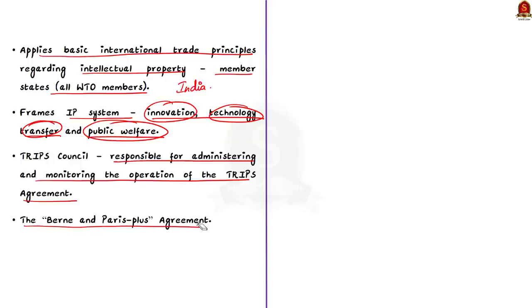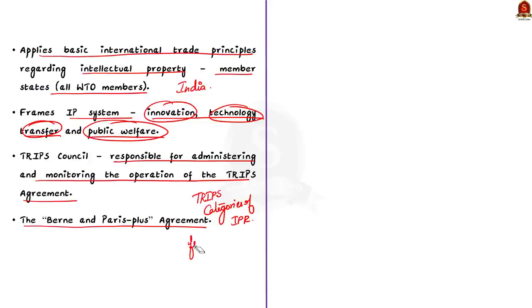With that, we have come to the end of our discussion on TRIPS. Quick recap: we saw TRIPS, a brief introduction and different categories of IPR — copyright and industrial properties. Finally, we discussed the features of the TRIPS agreement in detail. That's it for this article. Let us move on to the next part of our discussion.